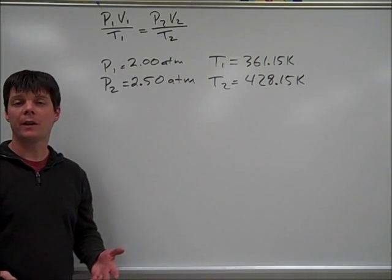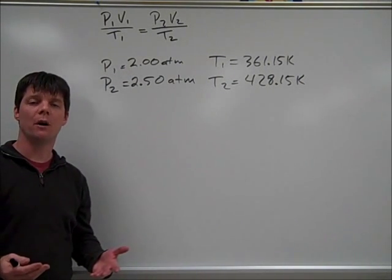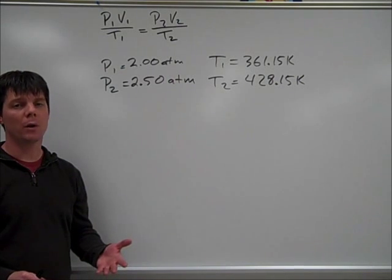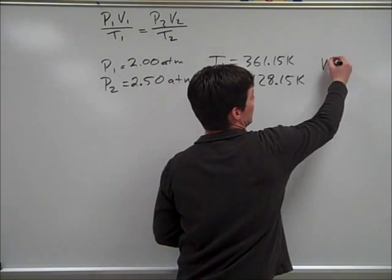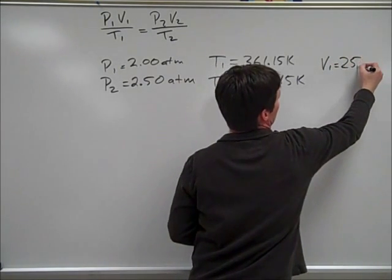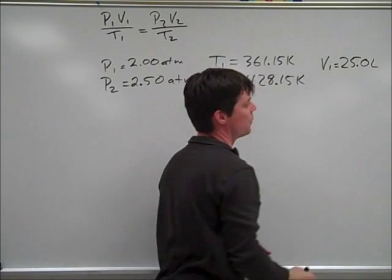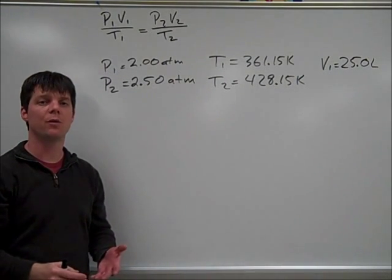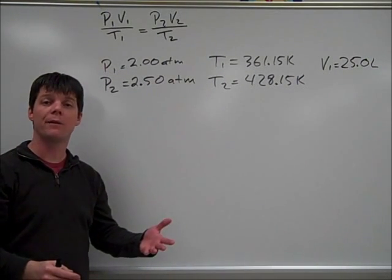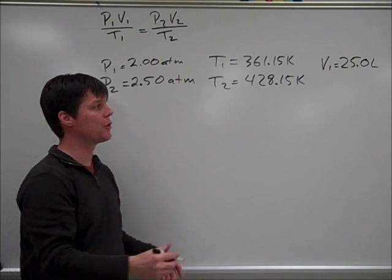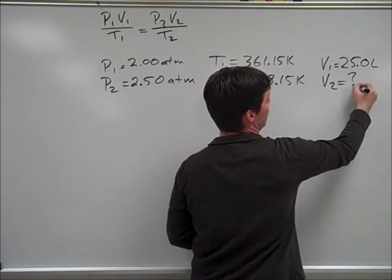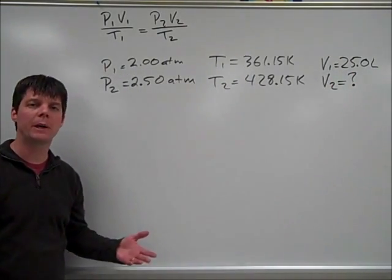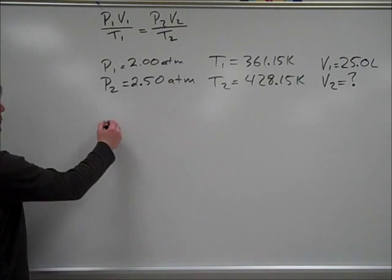The final thing that we need to look at are the volumes involved in this problem. The starting volume was 25 liters, and the ending volume is what we're trying to find. So I'll go ahead and write V2 equals question mark, because this is our unknown variable.